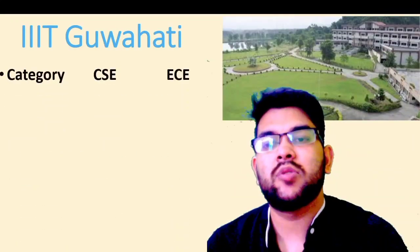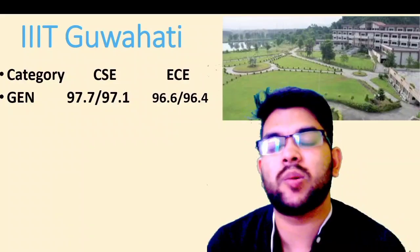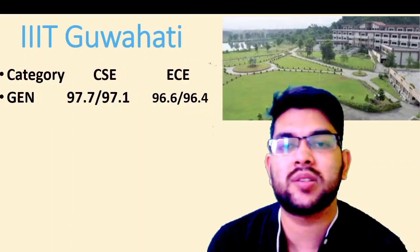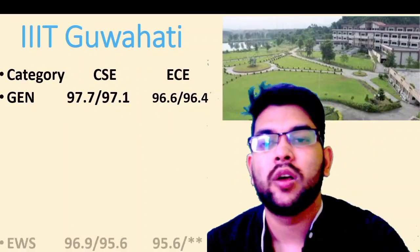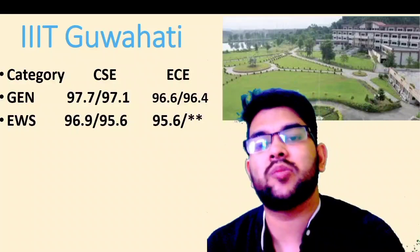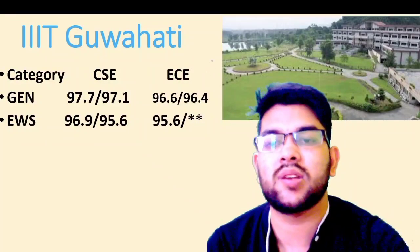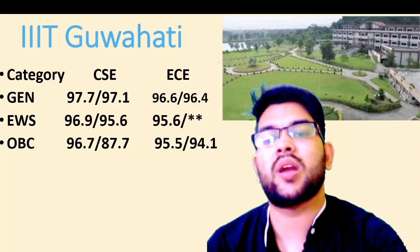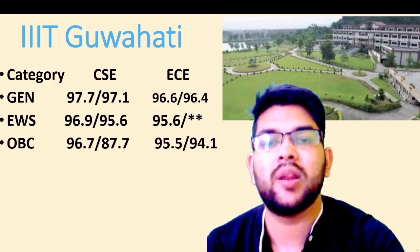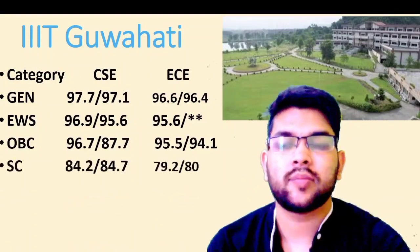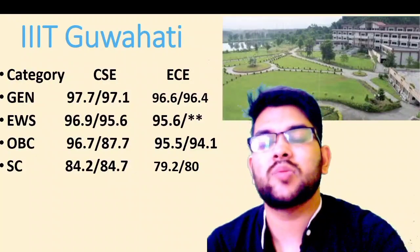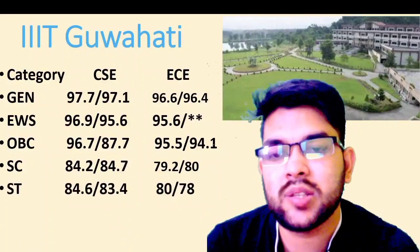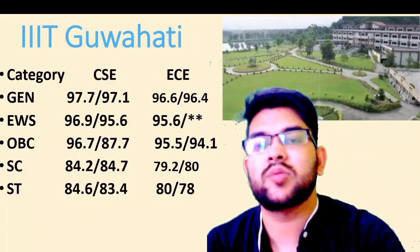For IIIT Guwahati: General — CS male 97.7, female 97.1; for EC you can check on-screen. EWS — CS male 96.9, female 95.6; for EC check sidewise. OBC — CS male 96.7, female 87.7. SC — CS male 84.2, female 84.7. ST — CS male 84.6, female 83.4, EC male 80, female 78. The value before the slash is for male and after the slash is for female.